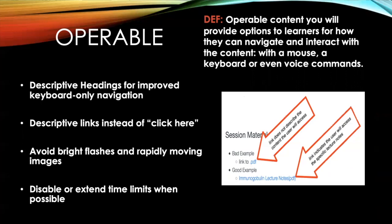Here are some tips for making your content operable. Organize the content into sections and start with descriptive headings to help improve navigation for everyone. This will also assist users who move around on screen entirely with the keyboard, because the tab button will neatly jump from one heading to the next.